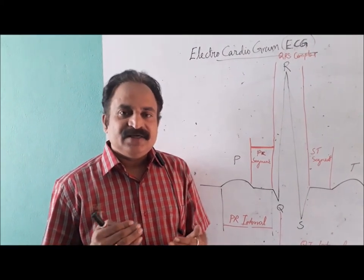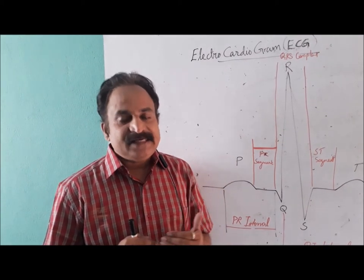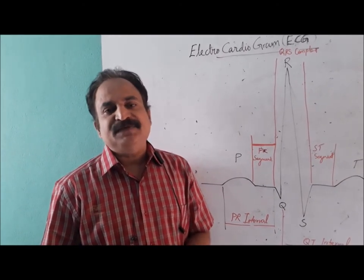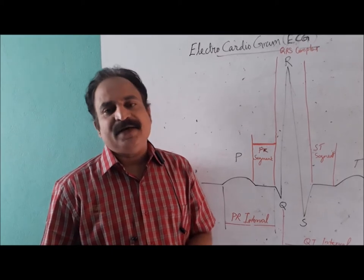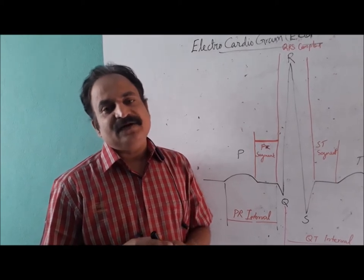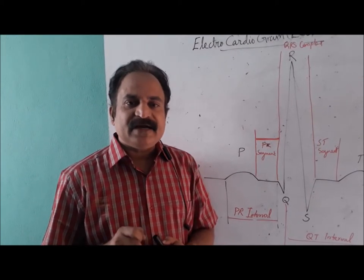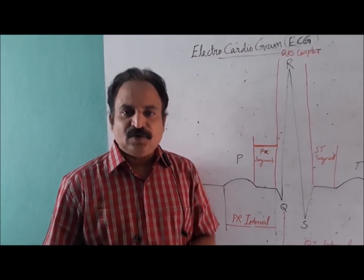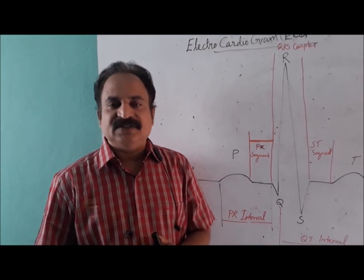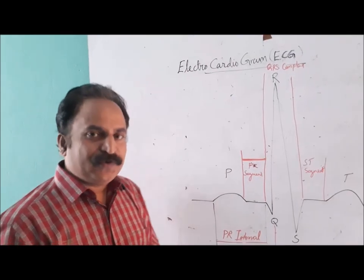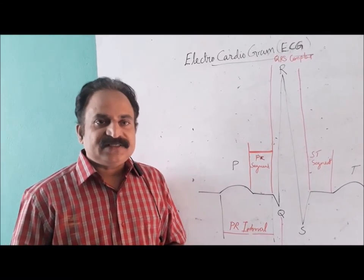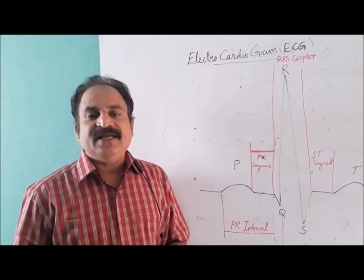What is cardiac impulse? In our earlier video, you might have seen the conducting system of the heart — its origin at the SA node, transmission to the AV node and from there to Purkinje fibers. The instrument employed for ECG is called an electrocardiograph. It picks up electric potential in different parts of the heart through application of electrodes in various positions on the surface of the body. ECG is a refined form of string galvanometer, first employed by Eindhoven in 1903.